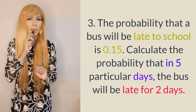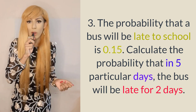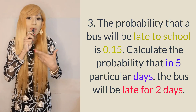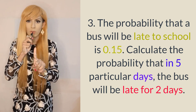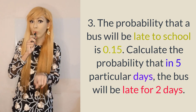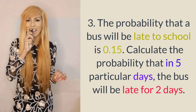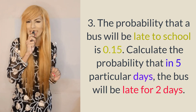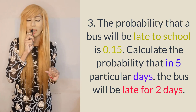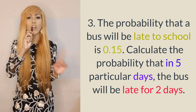Question number 3. The probability that a bus will be late to school is 0.15. From here we know X is the number of times the bus is late, P = 0.15, and Q = 1 minus 0.15 = 0.85. In 5 particular days the maximum is 5, so N = 5.